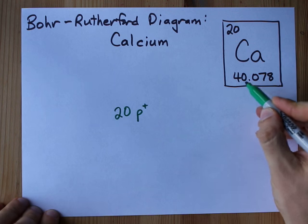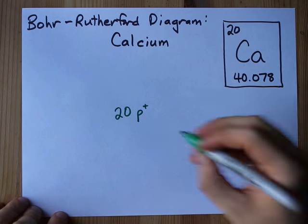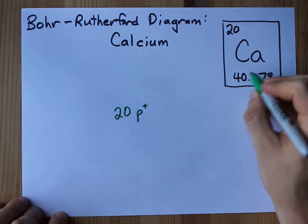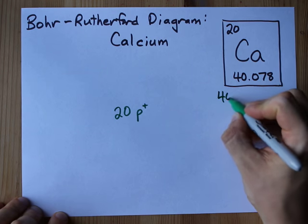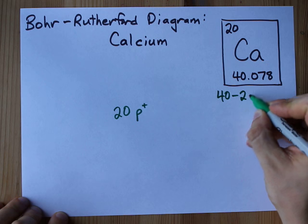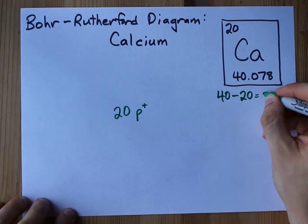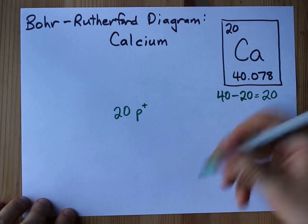Now the mass number is protons plus neutrons. So to get neutrons, you take that rounded number, 40, and you take away how many of them were protons, 20. Well that leaves me with 20 neutrons.